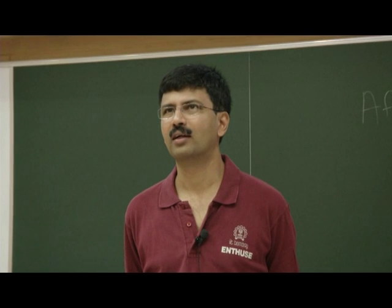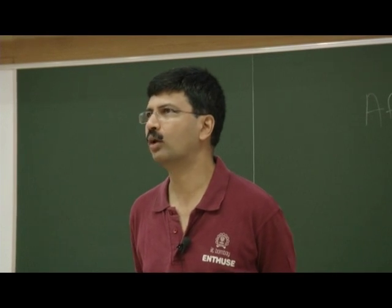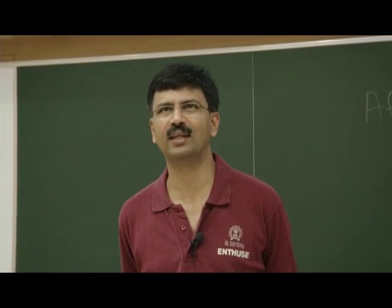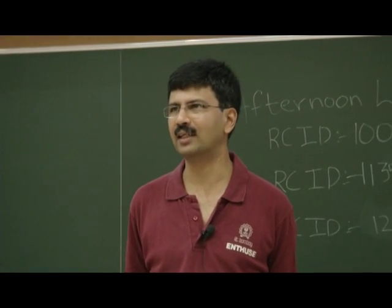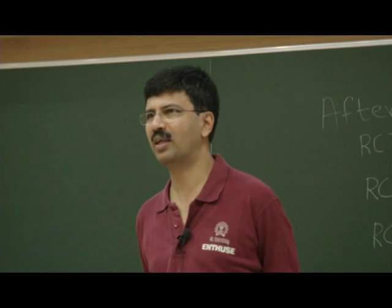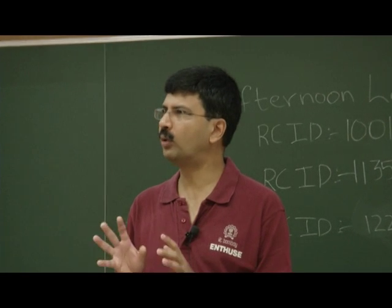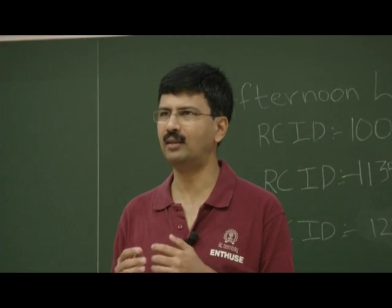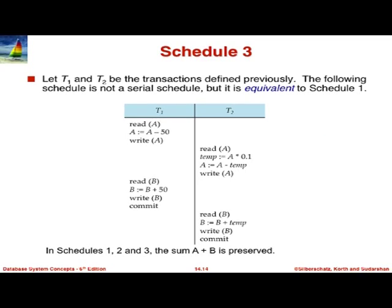How do we know if a concurrent schedule is right or wrong? This is where serializability comes in. The notion of serializability says: an interleaved schedule is acceptable provided it is equivalent in some sense to a serial schedule. Serial schedules we know are safe — they are not concurrent and therefore fine. If we can show that a concurrent schedule is somehow equivalent to a serial one, then it is also fine. But what do we mean by 'equivalent'?